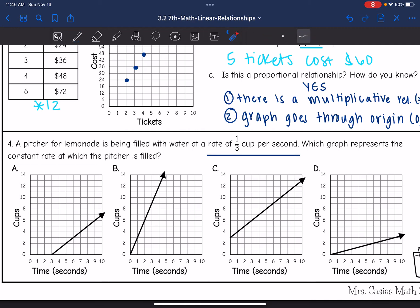So like this one, graph C doesn't make sense because I wouldn't have a pitcher with three cups after zero seconds. So I can go ahead and eliminate C. And then A doesn't make any sense either because it's not starting filling until three seconds and they didn't tell us that information on the problem.